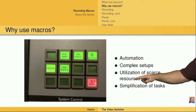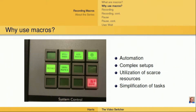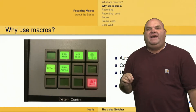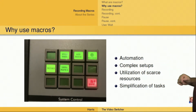This allows us to use our scarce resources. The switcher we happen to be using is an ATEM switcher that only has two effects keys and two downstream keyers. By using macros, we have the ability to utilize these two keyers and the two downstream keyers to perform very cool things when we only have those four keyers to work with. And lastly, this simplifies our ability to do these complex things using macros where we don't have to perform these tasks very quickly, especially during a live shoot.